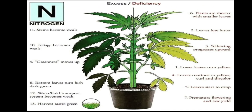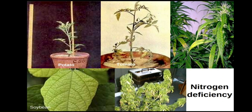Bottom leaves turn lush dark green, and the water transport system becomes weak. The harvest stays fully green with excess vegetative growth. As a result of excess nitrogen, reproductive growth is reduced, which causes yield loss.